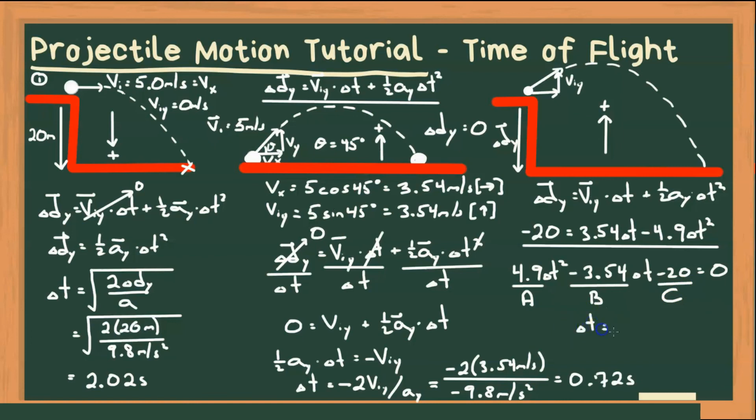If you don't remember, so delta t will be minus b plus or minus the square root of b squared minus 4ac all over 2a. So when we plug all these values in as these coefficients for time, we will get the following two values.